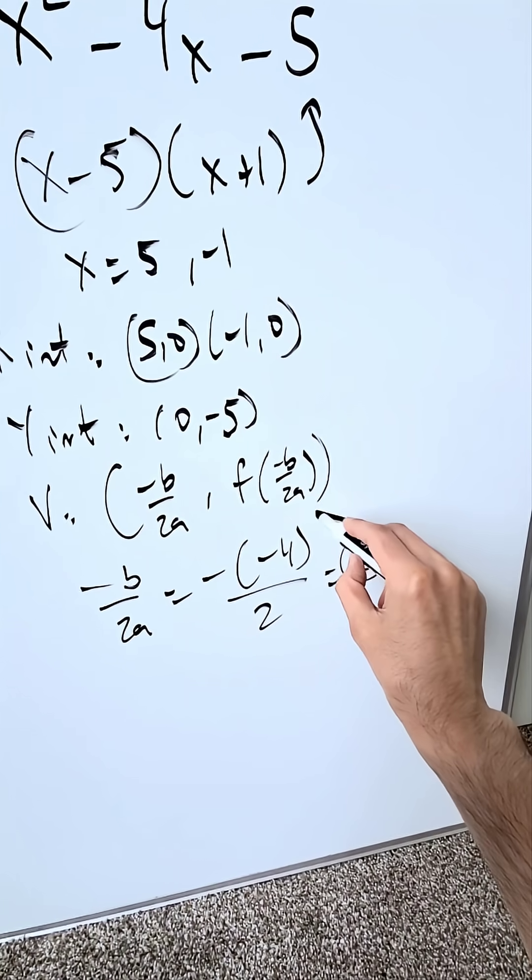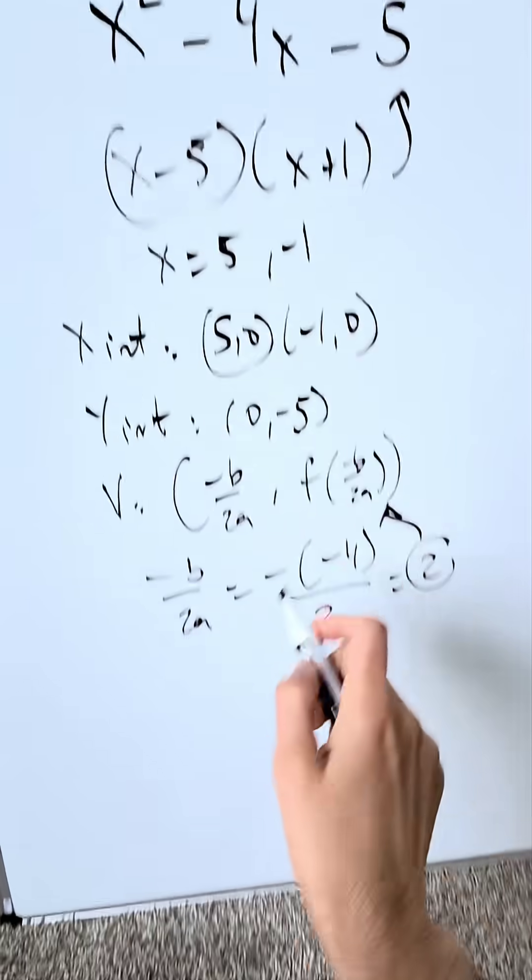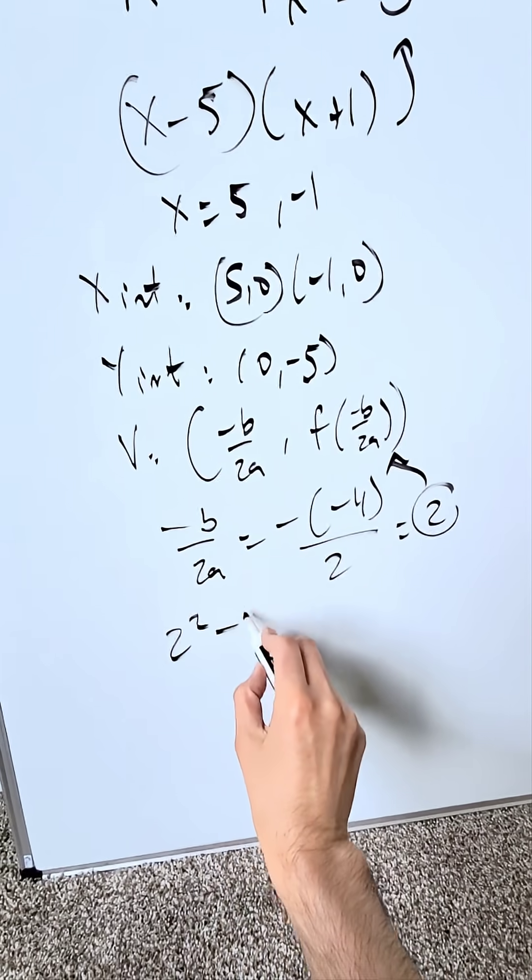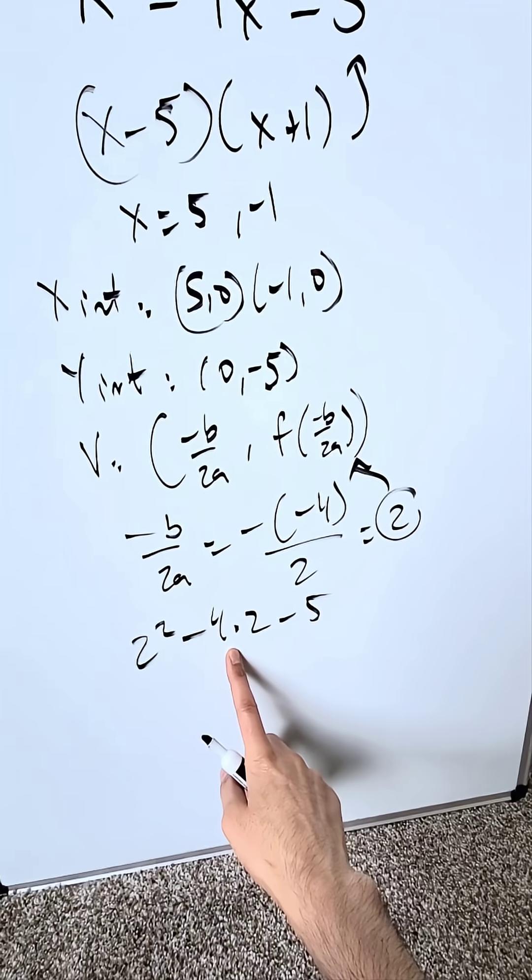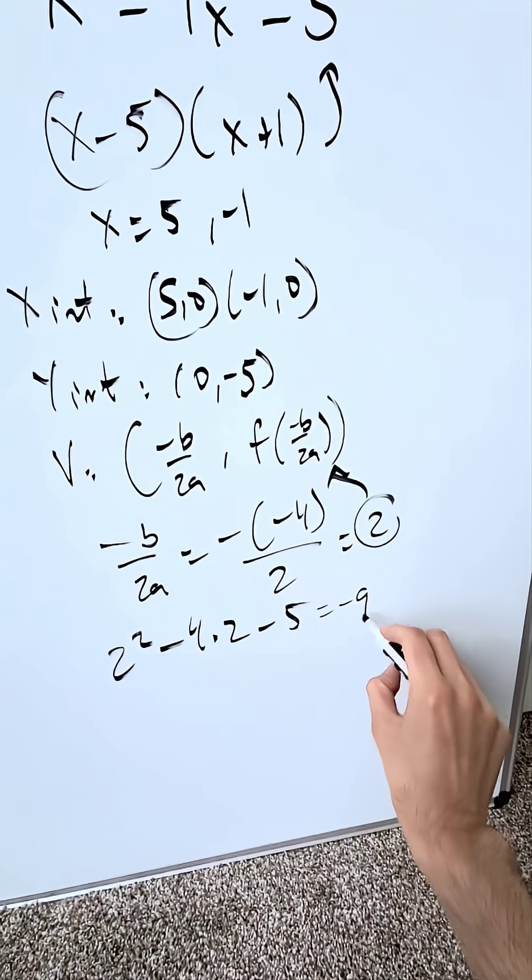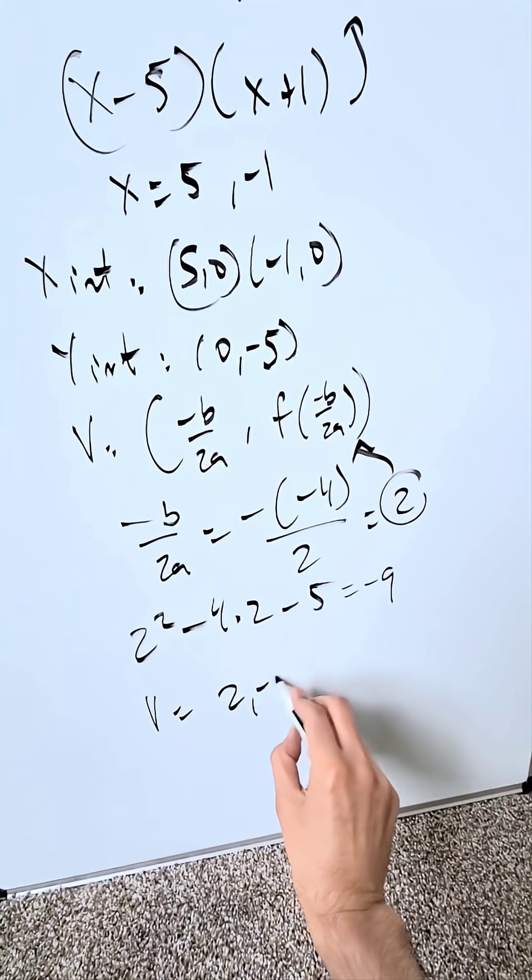I'll take this 2 and I'll put it into my original function meaning I'm putting 2s in places of x. We're looking here at 2 squared minus 4 times 2 minus 5. 4 minus 8 minus 5. It's minus 9. That tells me our vertex here is going to be 2 comma minus 9.